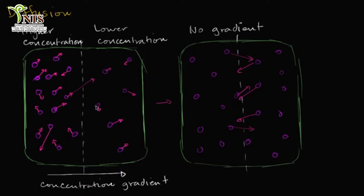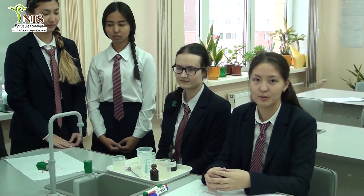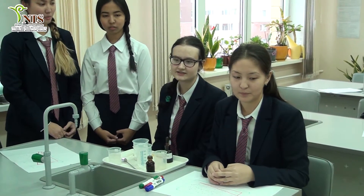I want to make this point clear: you can still have movement from right to left even with higher concentration on the left — it's just less likely. There's just more stuff on one side, and they're all bouncing in random directions. Diffusion is a net passive movement of particles from a region of higher concentration to regions of lower concentration. It continues until the concentration of substances is uniform throughout.